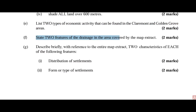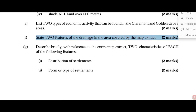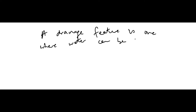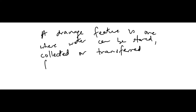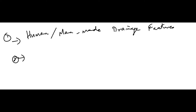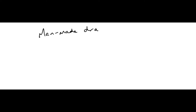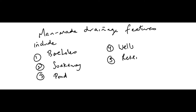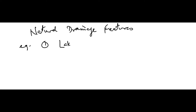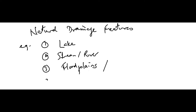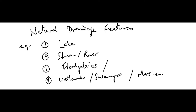Part F: state two features of drainage in the area covered by the map extract. First, we need to understand what a drainage feature is — one where water can be stored, collected, or transferred from one area to another. This can be subcategorized into man-made drainage features, which include boreholes, soakaways, wells, ponds, and reservoirs, or natural drainage features such as lakes, streams, rivers, floodplains, wetlands, swamps, and marshes.